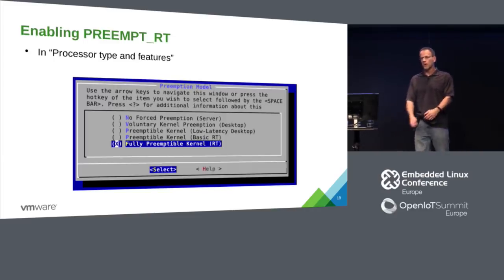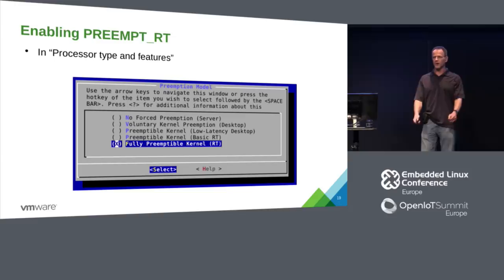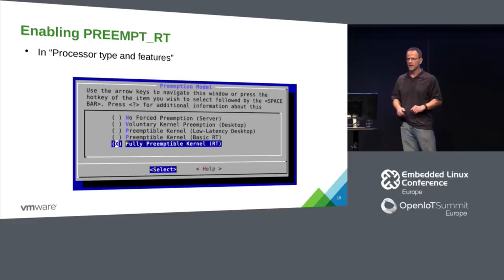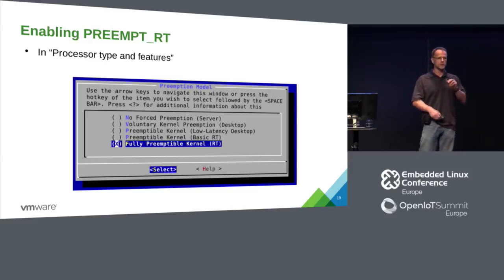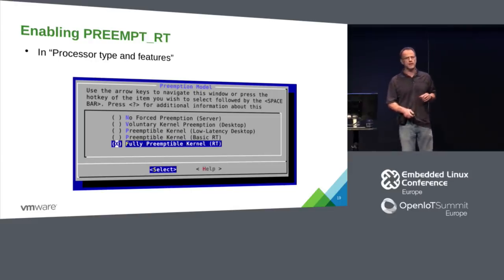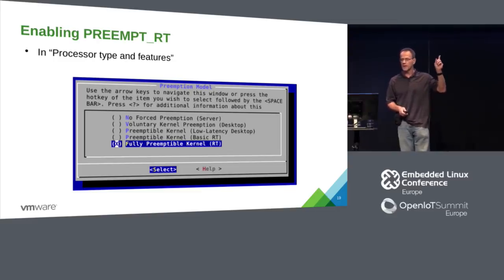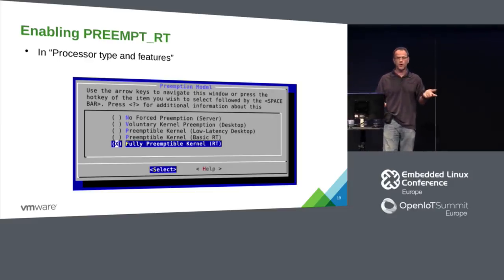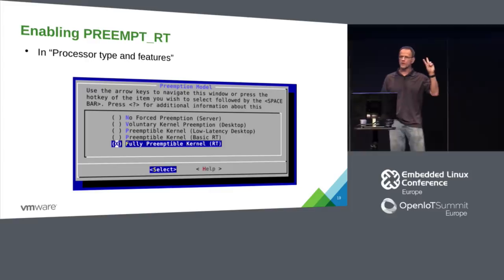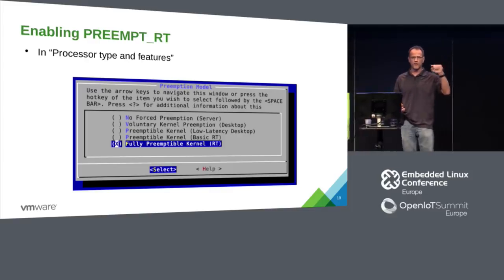When real-time comes into the Linux kernel, you'll go to make menuconfig, processor types and features, and there'll be a preemption model selection. The first three options are what exist today: no forced preemption, voluntary kernel preemption, and preemptable kernel / latency desktop. Two new options are added, and the final one is full PREEMPT_RT.